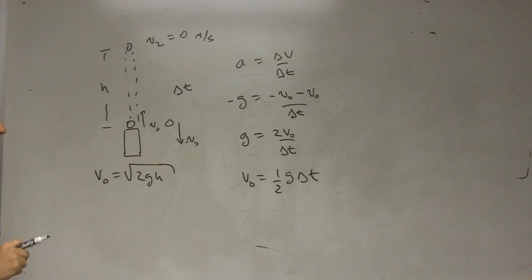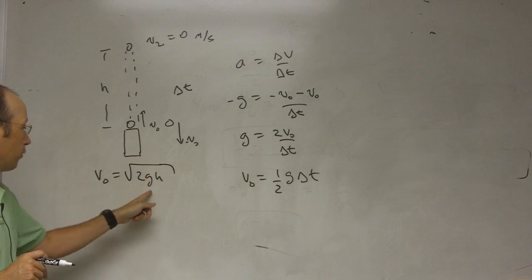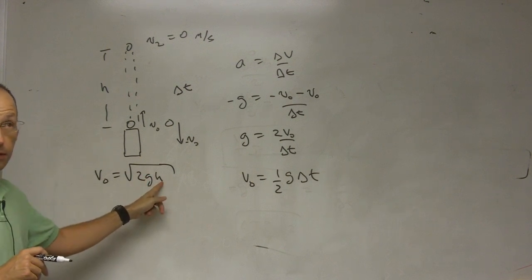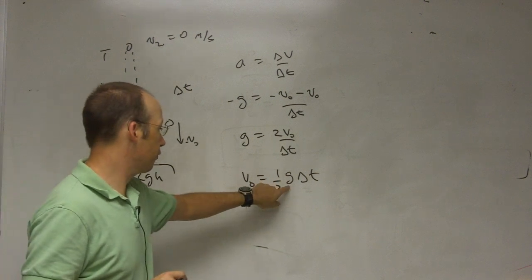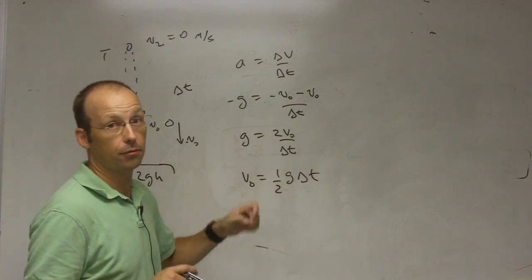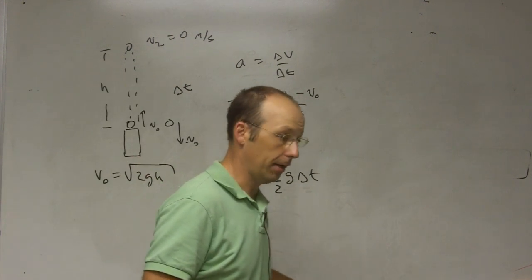That would be the initial velocity of the ball. So here I just measure delta t, and I can determine the initial velocity. I mean, one thing you can check back over here, does it have the right units? This is meters per second squared times meters, is meters squared per second squared, you take the square root, good. This is meters per second squared times seconds, gives meters per second. So now you're all set, you can do the lab.